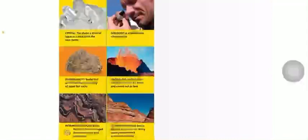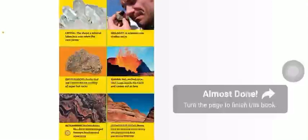Crystal: the shape a mineral takes in a rock when the rock forms. Geologist: a scientist who studies rocks. Igneous rock: rocks that are formed by the cooling of super hot rocks. Magma: hot melted rock that forms inside the earth and comes out as lava. Metamorphic rocks: rocks that have been changed through heating and squeezing. Sedimentary rocks: rocks that are formed when many small pieces of rock are glued together.